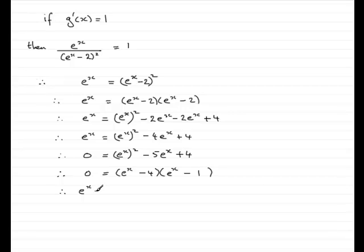e^x - 4 would equal 0, or the other factor, e^x - 1, would equal 0. And that would lead to e^x equaling 4, or in this case, e^x equaling 1.